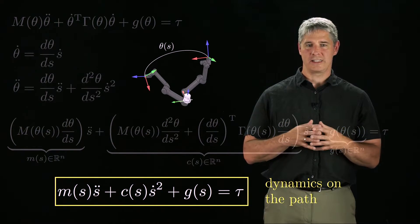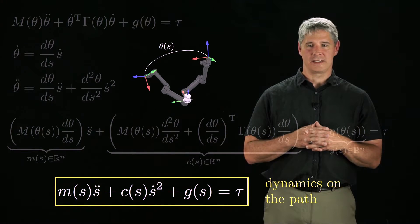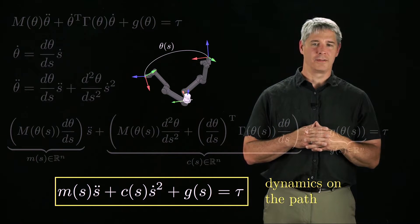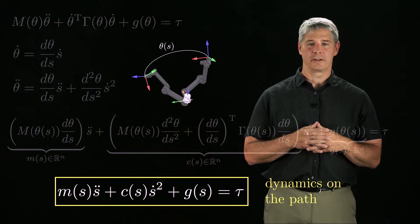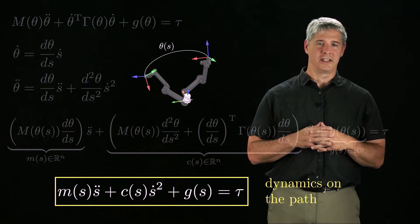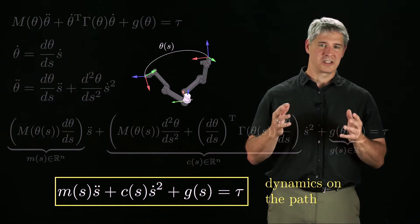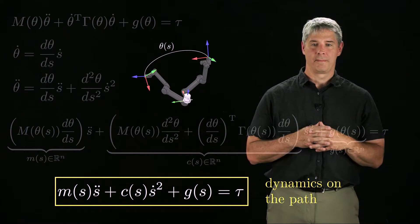c(s) times s dot squared is a velocity product term, g(s) is the gravity term, and m(s) plays the role of a mass. Some elements of the m vector may be negative, however. This equation is the dynamics of the robot when it is restricted to move along the path theta of s. This equation says nothing about the dynamics when the robot is off the path.